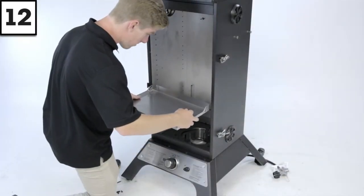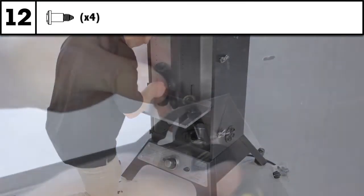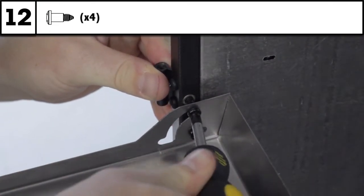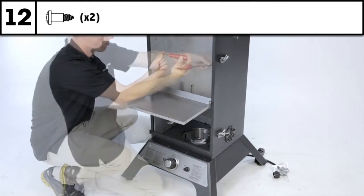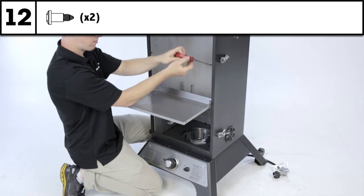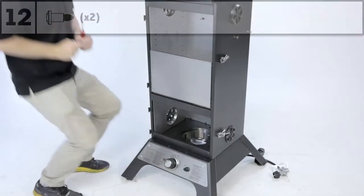Step 12: Install the fold down grease tray using the four shoulder screws provided. Now install two additional shoulder screws at the closure point of the grease tray. These will allow the tray to lock in the upright position. The lower screws act as a pivot point, while the upper screws act as a guide.